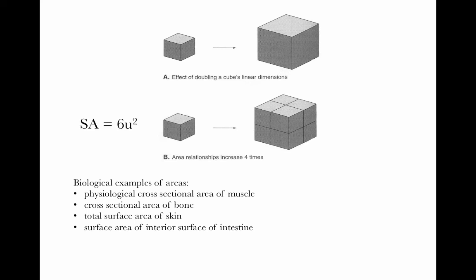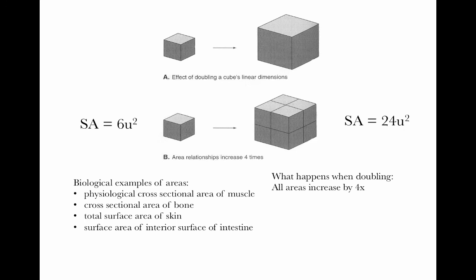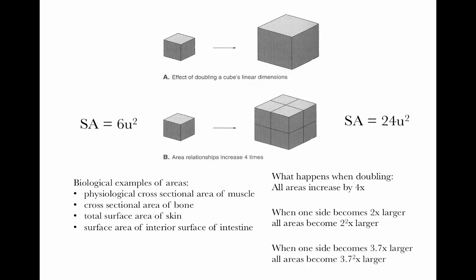The surface area of a cube with side length of 1 unit is 6u squared — the area of each side is u squared, and there are six sides. If we double that side, the surface area of one side becomes 2 squared, so 4 times 6 sides gives 24u squared. We doubled the side and all areas increased by 4 times. When one side becomes 2 times larger, all areas become 2 squared times larger. If we increase the size by 3.7 times, all areas become 3.7 squared times larger.